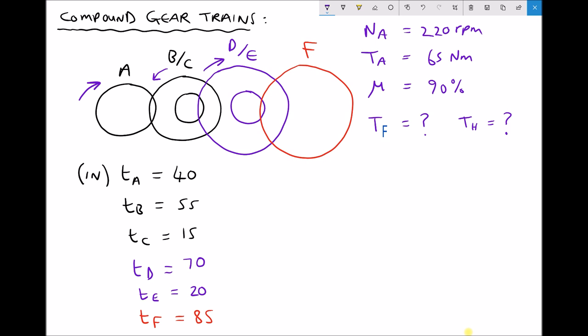I've added some arrows on there to show the direction of rotation. If gear A is rotating clockwise, then BC must be rotating anti-clockwise. And if BC is rotating anti-clockwise, then DE rotates clockwise. What that means is gear F, our output, is rotating in the opposite direction to our input. If we were to add another gear or a compound gear, then F would rotate in the same direction as A. So it's entirely dependent on the number of gears between the input and the output.